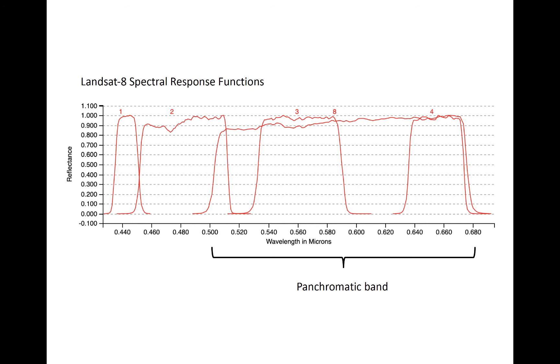However, because the panchromatic band is very wide, it senses more radiation than any of the narrower channels do alone. As a result, it can detect enough signal to capture reflectance at smaller spatial intervals.